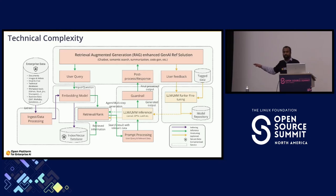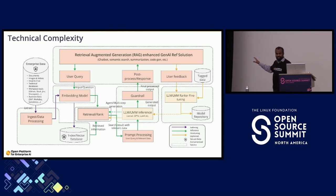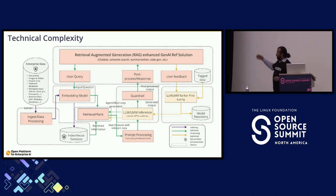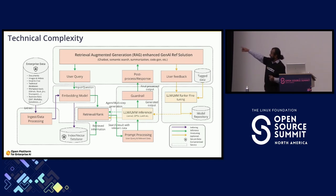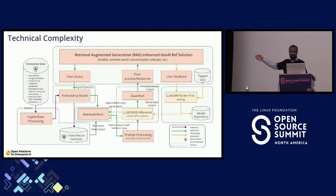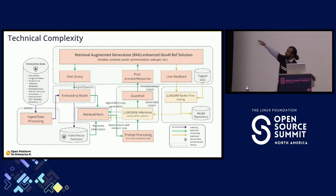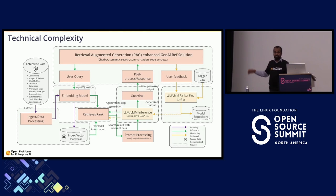Let's take a deeper dive into what an LLM plus RAG solution entails today. This is a typical architecture diagram showing three paths. One path is where you just use an open-source model for inference — your user query comes in, goes through an existing embedding, a retrieval or ranker, prompt processing, inference engine with a guardrail, and then post-processing to output.